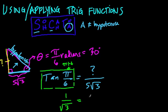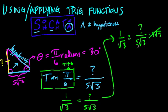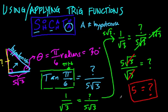So 1 over the square root of 3 equals the opposite over the adjacent — our mystery side over 5 times the square root of 3. Now I want to figure out my mystery side, so I'll solve this equation by multiplying both sides by 5 times the square root of 3. That cancels out on the right, and on the left we have 5 times the square root of 3 divided by the square root of 3. Since the square root of 3 divided by itself is 1, our mystery side equals 5. In this triangle, the mystery side is equal to 5.